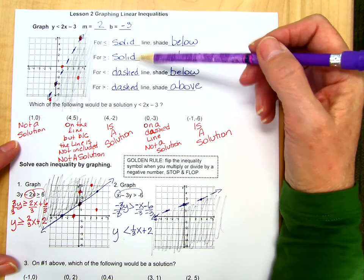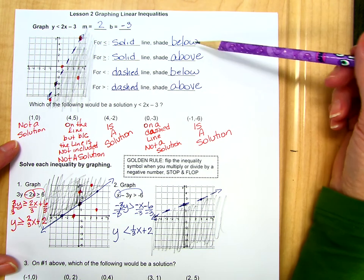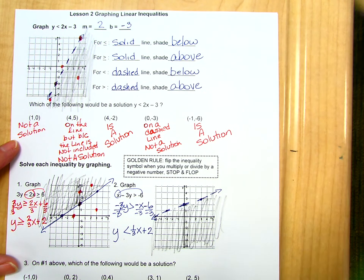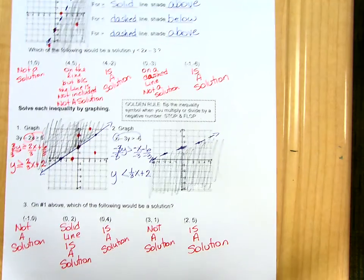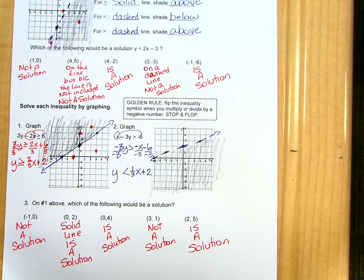So here is how the solid and dashed lines go, whether it's below or above, what those look like when you are testing points, and whether something is a solution or is not.